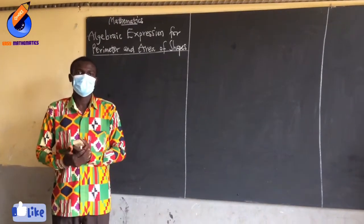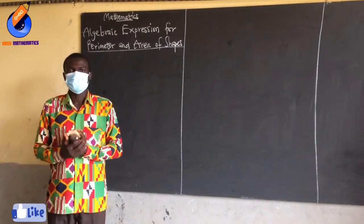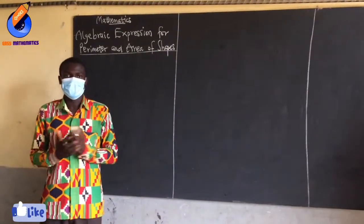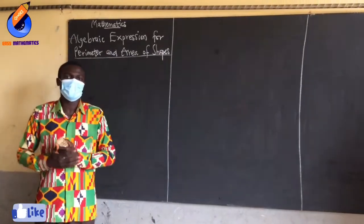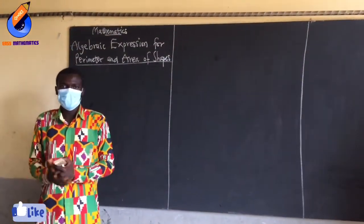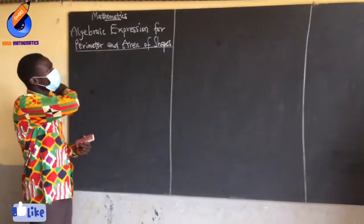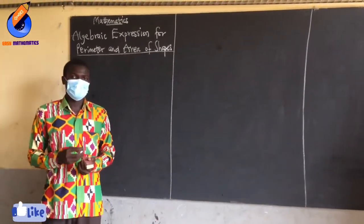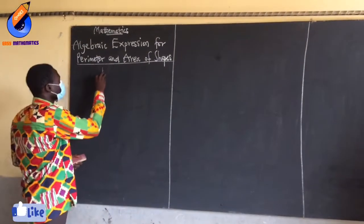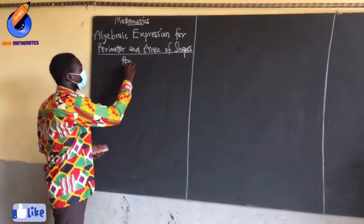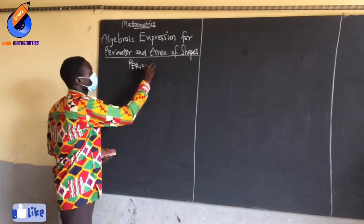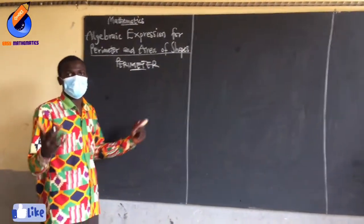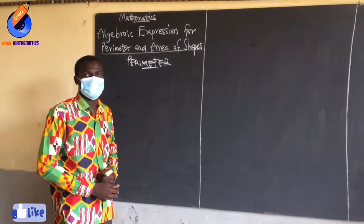Good afternoon fellow viewers. Welcome back to Easy Mathematics. Last week we were talking about algebra, or algebraic expressions — how to simplify and substitute. Today we want to look at algebraic expressions for perimeter and area of shapes. We want to start with the perimeter.